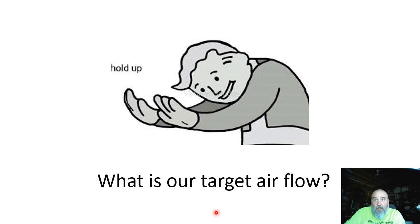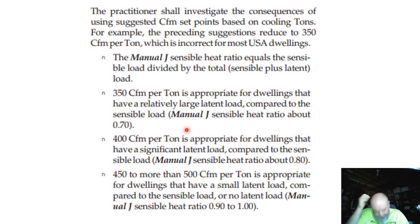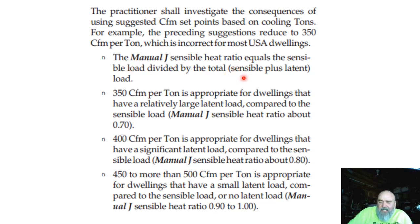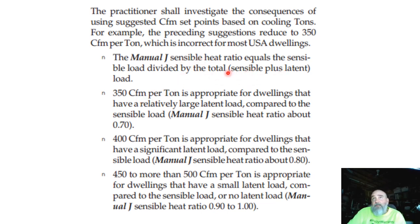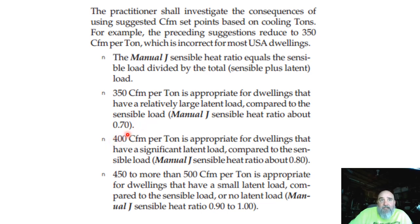This image addresses what our target airflow is supposed to be, and we're going to get guidance from Manual S. Manual J is telling us that our sensible heat ratio is going to dictate what our airflow is supposed to be. Our sensible heat ratio is calculated by taking our sensible BTUs divided by our total BTUs from our load calc. 350 CFM per ton is appropriate when you've got a wet house — a sensible heat ratio of 0.7. Where your house is located doesn't necessarily dictate that number; it's how leaky the house is.